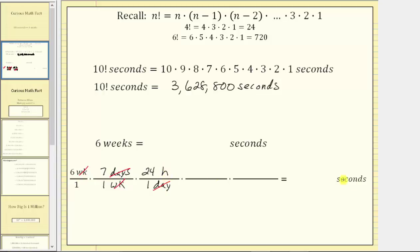But again, our goal is to have seconds, not hours. So now we convert hours to minutes by multiplying by another unit fraction. Because one hour equals 60 minutes and we want hours to simplify out, the next unit fraction will have one hour in the denominator and 60 minutes in the numerator. The units of hours simplify out and we now have minutes.